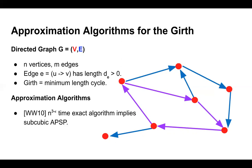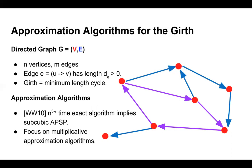Unfortunately, work of Williams and Williams has shown that any subcubic time algorithm to compute the girth exactly actually implies that you can compute APSP — all-pairs shortest path — exactly in subcubic time, which is conjectured to be impossible. This is a popular hardness assumption, so there's been a focus on getting multiplicative girth approximation algorithms instead.